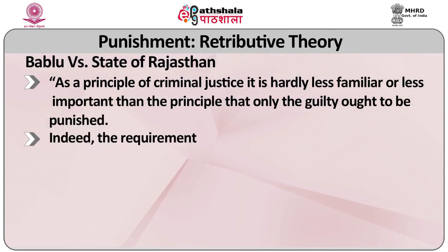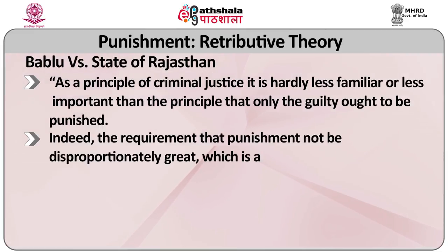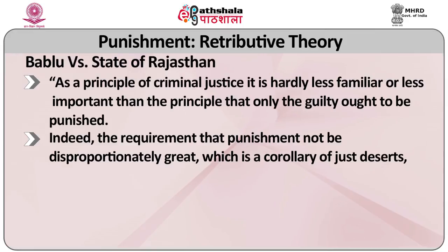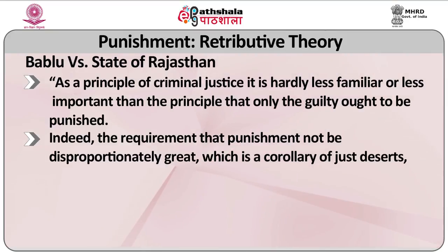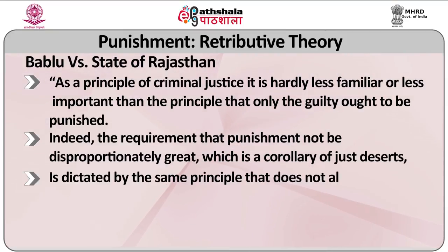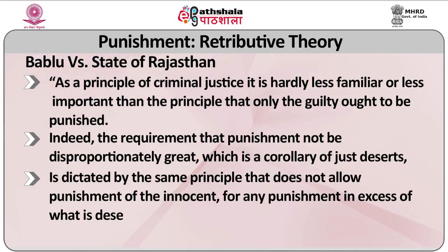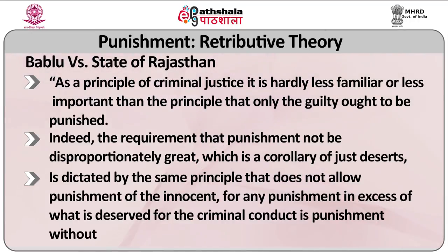In Bablu versus State of Rajasthan, the Supreme Court reiterated that as a principle of criminal justice, it is hardly less familiar or less important than the principle that only the guilty ought to be punished. The requirement that the punishment not be disproportionately great, which is a corollary of just desert, is dictated by the same principle that does not allow punishment of the innocent. Any punishment in excess of what is deserved for the criminal conduct is punishment without guilt.